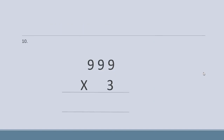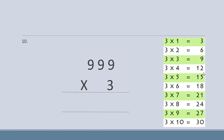Now we have a number nine hundred and ninety-nine and we have to multiply it with three. Ab hamare paas ek number hai nine hundred and ninety-nine aur usko humne three ke saath multiply karna hai. Step one: write the table of three in the rough column. Hum three ke table rough column mein isliye likhte hain ta ki hamare liye aasani ho question solve karne mein.